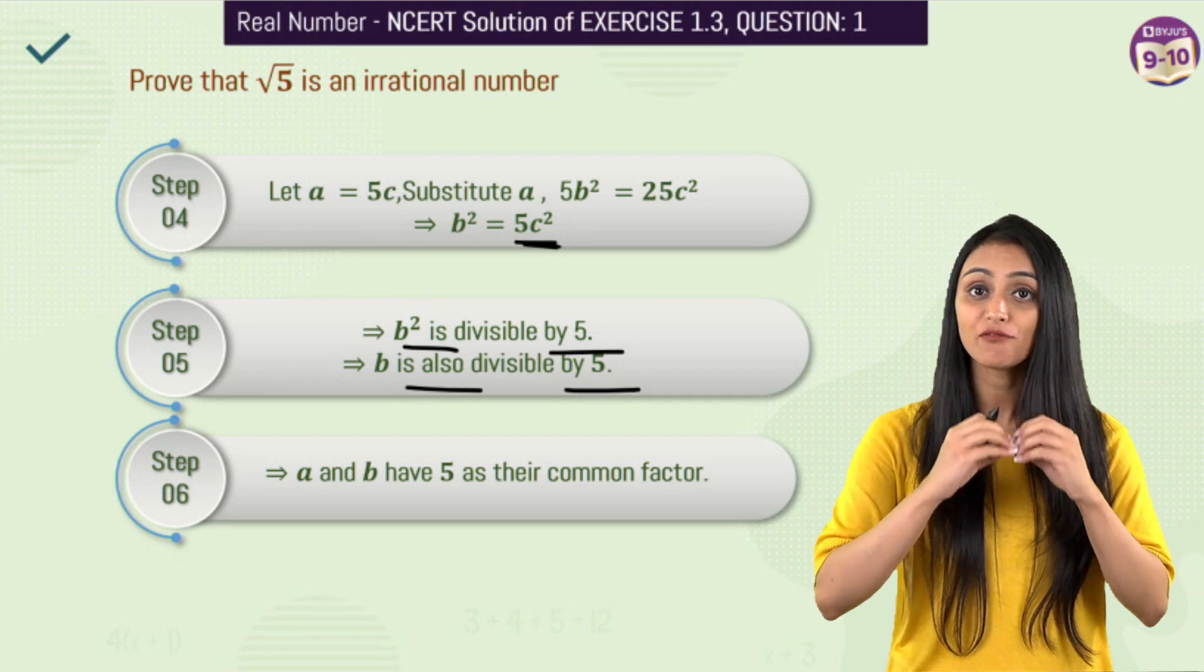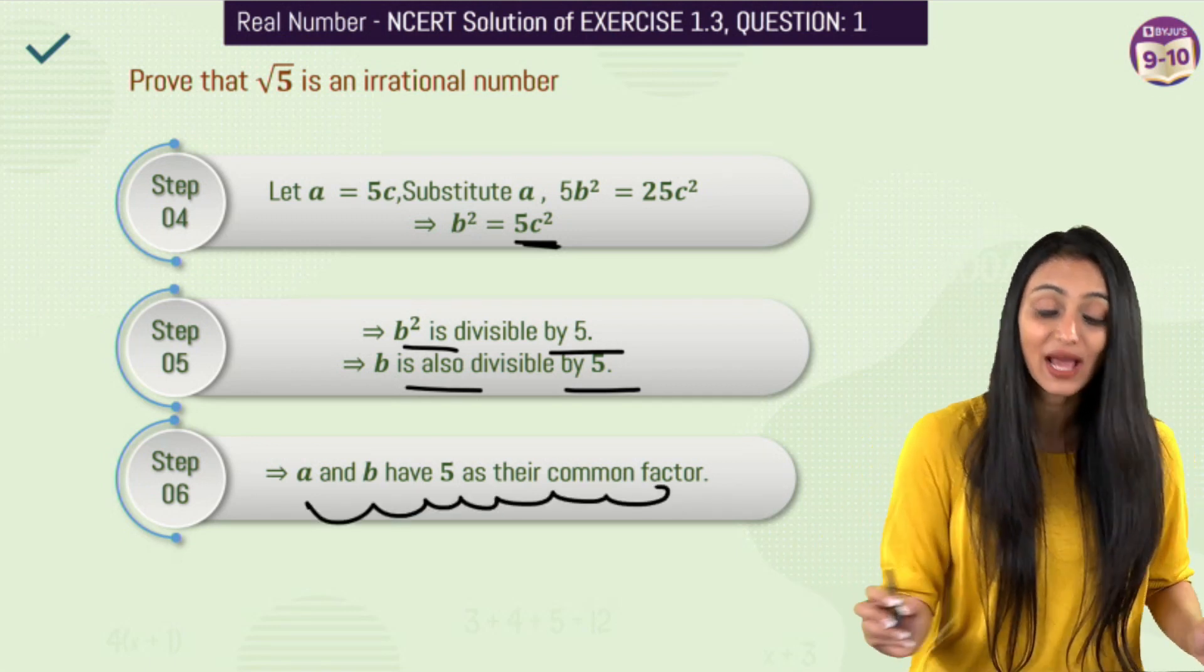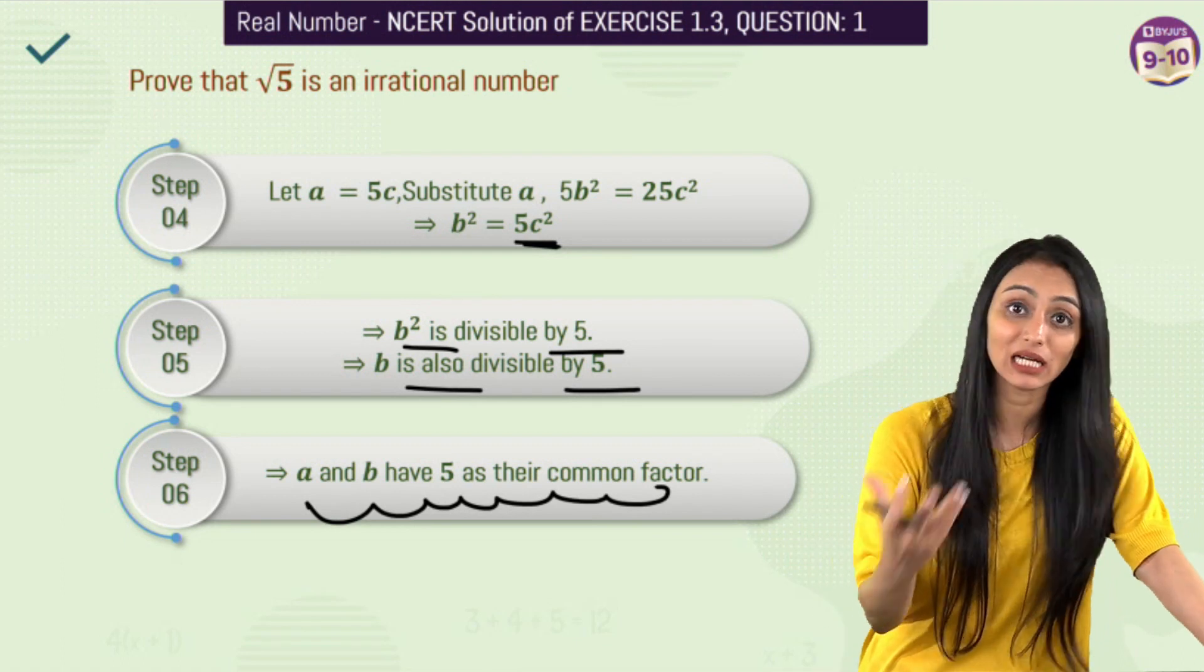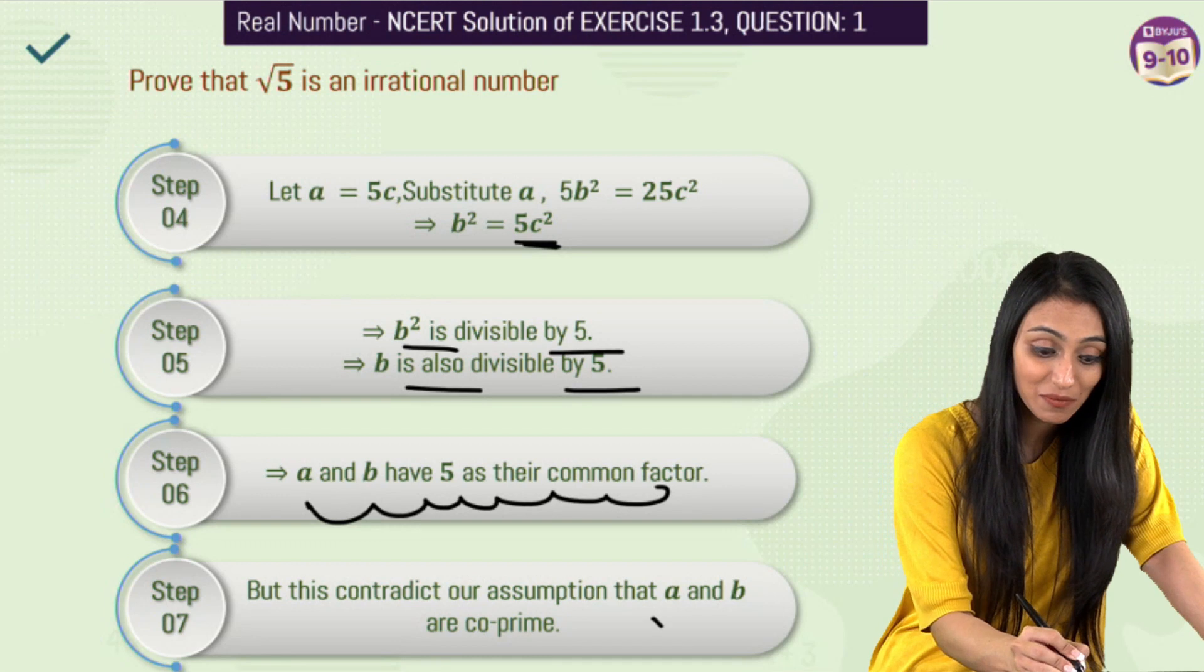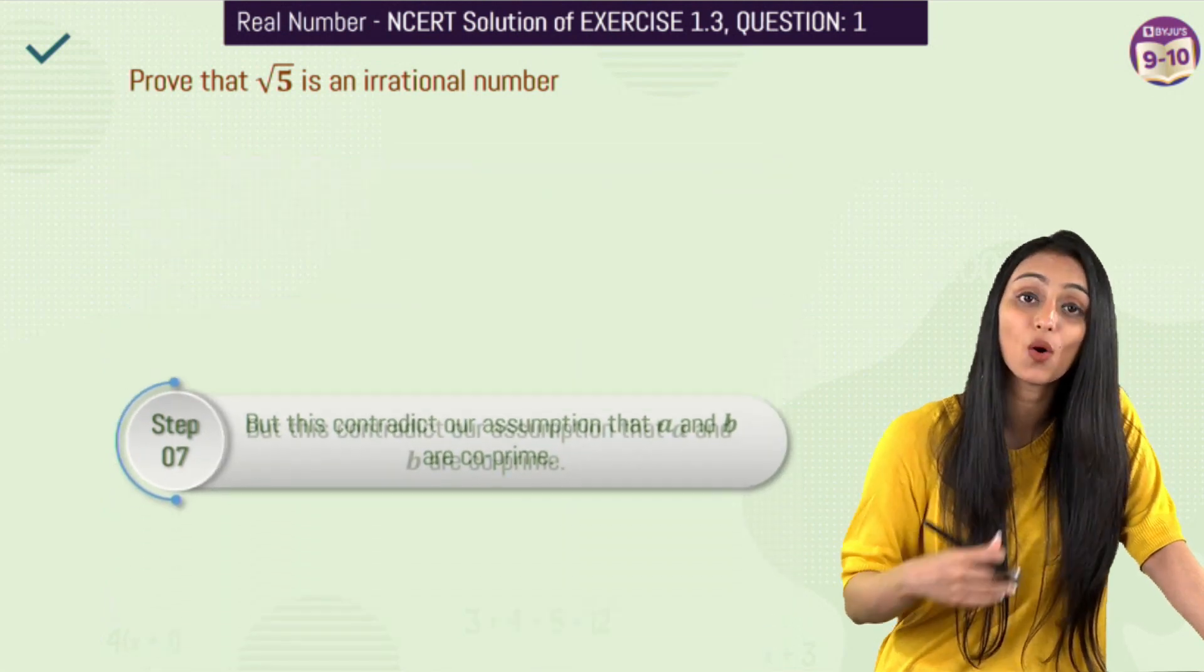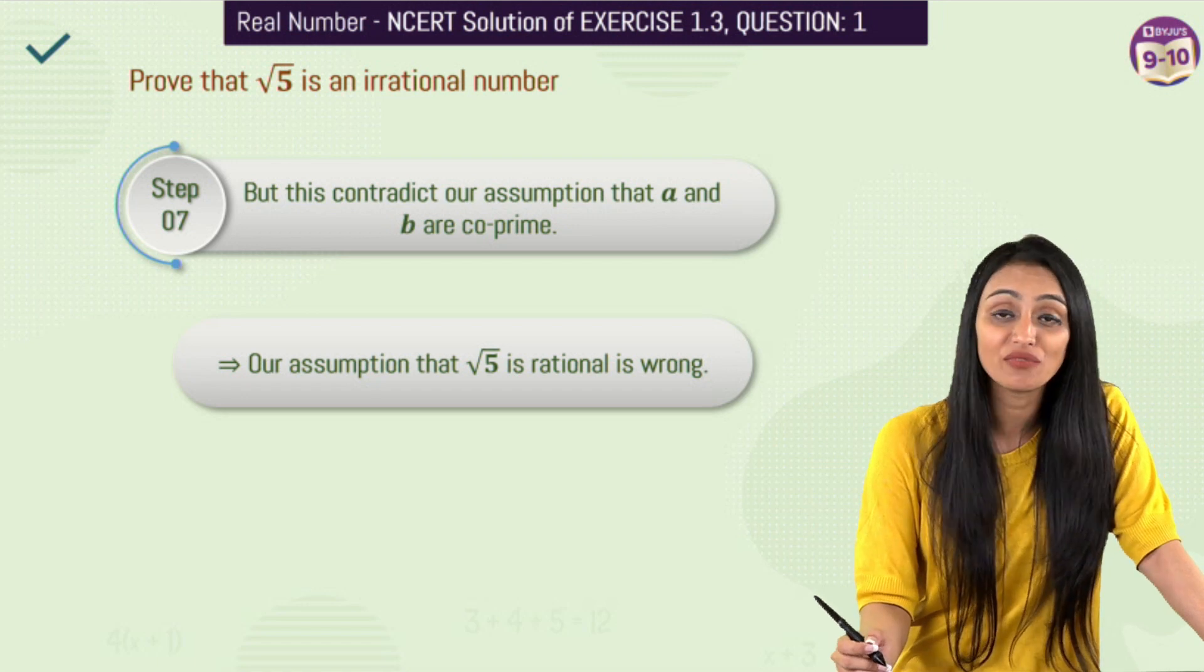So what we could see here is that initially we assume that a and b are co-prime. They have nothing common between them. They have no common factor except 1. But here we can see that they both have 5 as their common factor. Since they both are divisible by 5, that means our assumption was wrong that a and b are co-prime over here. So this contradicts that our assumption is wrong. This contradicts the fact that root 5 is rational.